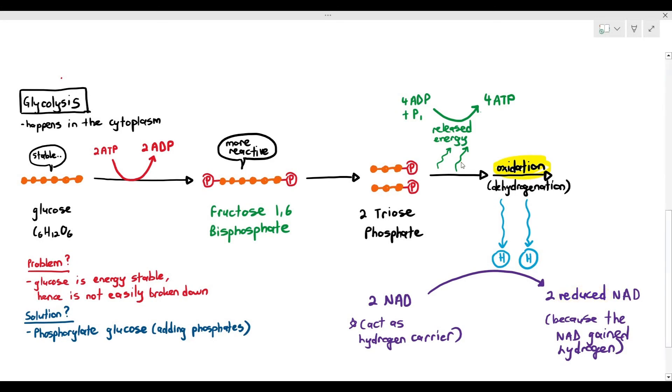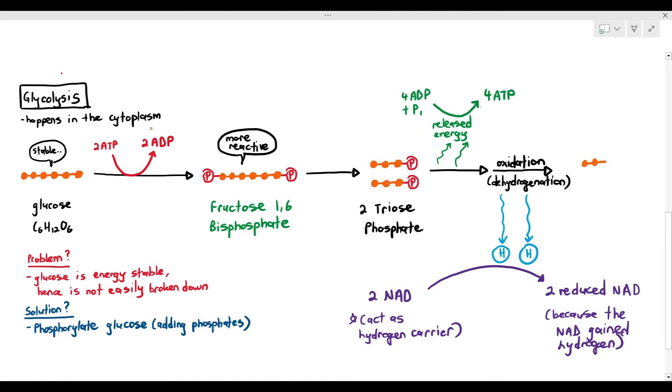The final molecule that is formed in glycolysis is the two pyruvate molecules. Essentially, glycolysis is made up of four steps: phosphorylation using two ATP molecules, lysis to break it down into triose phosphates, substrate-linked reaction (you cannot write SLR in the exam, you have to write out the full name), and oxidation or dehydrogenation. These are the four steps of glycolysis in a nutshell.